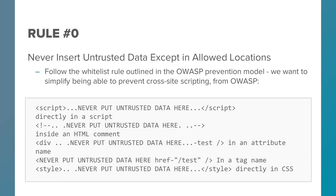Now we're going to talk about the cross-site scripting rules from OWASP's cross-site scripting rule cheat sheet. Rule 0 is the most fundamental rule: do not insert untrusted data except in the allowed slots. You should never put untrusted data directly in between script tags, inside an HTML comment, into an attribute name, in a tag name, or directly in CSS.